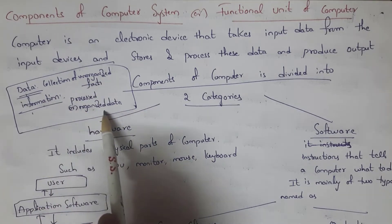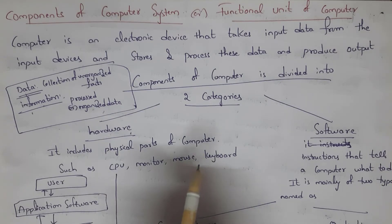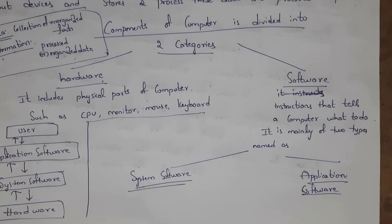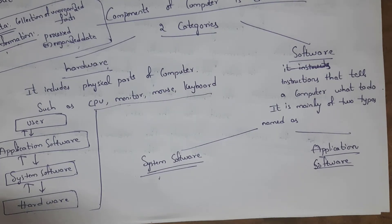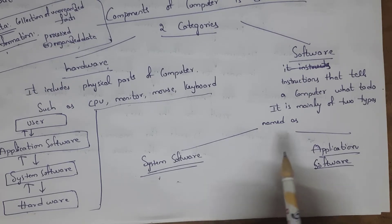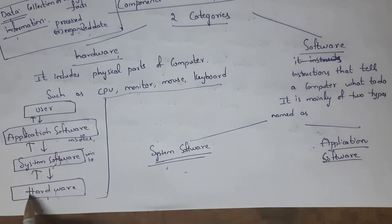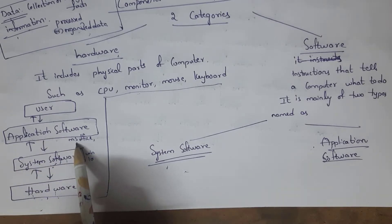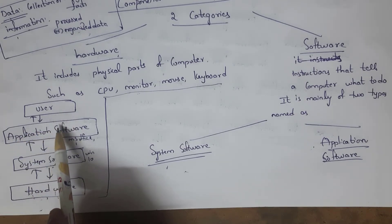Components of computer are divided into two categories: hardware and software. Hardware refers to the physical parts of a computer — like CPU, monitor, mouse, and keyboard — which we can touch. Software provides instructions to the computer, telling it what to do. There are two types of software: system software (e.g., Windows XP, Windows 10, Linux) designed for the system, and application software (e.g., Photoshop, MS Office) designed for users. System software acts as an interface between hardware and application software, while application software acts as an interface between system software and the user.